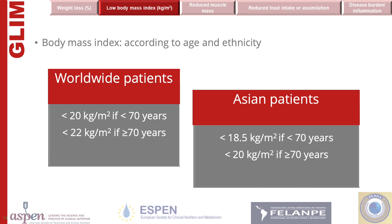A low body mass index, or BMI, is also a phenotypic criteria. Different cut points are recommended based on age and if the patient has Asian ancestry. A healthy body weight for Asian patients occurs when their BMI is greater than or equal to 18.5. For other older adults who are prone to sarcopenia and loss of bone mass, a slightly higher cut point is used to determine the risk of low BMI.